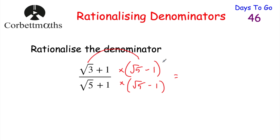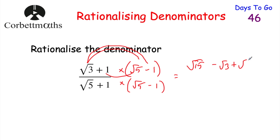Multiplying out the numerator (root 3 plus 1) by (root 5 minus 1): root 3 times root 5 gives root 15; root 3 times minus 1 gives minus root 3; 1 times root 5 gives plus root 5; and 1 times minus 1 gives minus 1. So the numerator is root 15 minus root 3 plus root 5 minus 1, and that can't be simplified further.